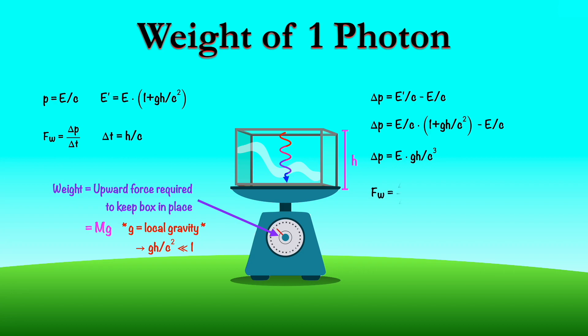Now all that's left to do is divide by the change in time and simplify to get that the weight of the photon is its energy divided by c squared times the local gravitational acceleration. And since we can write the weight as the gravitational mass times g, comparing this with our answer, we find that the gravitational mass is equal to energy over c squared, which was the same as the gravitational mass that is responsible for creating a gravitational field, and it's the same as the inertial mass.